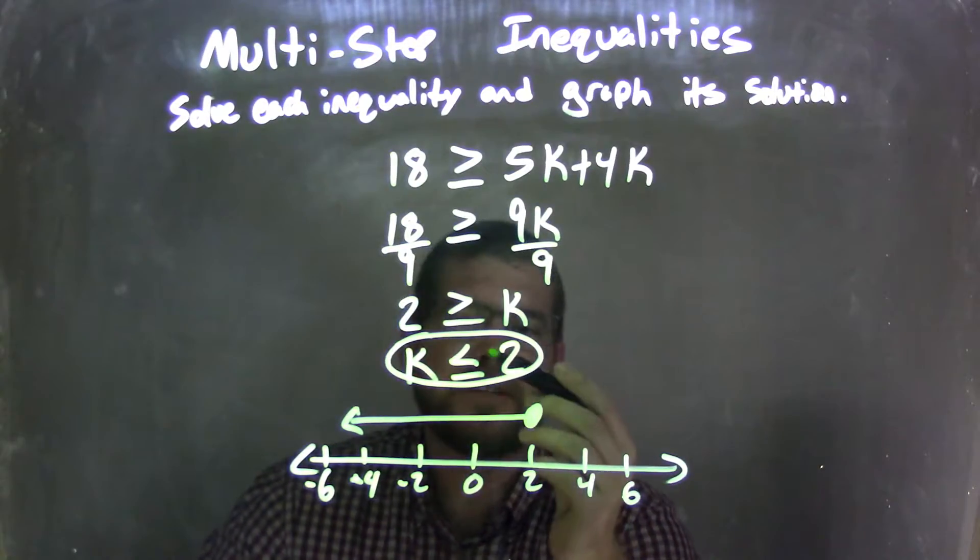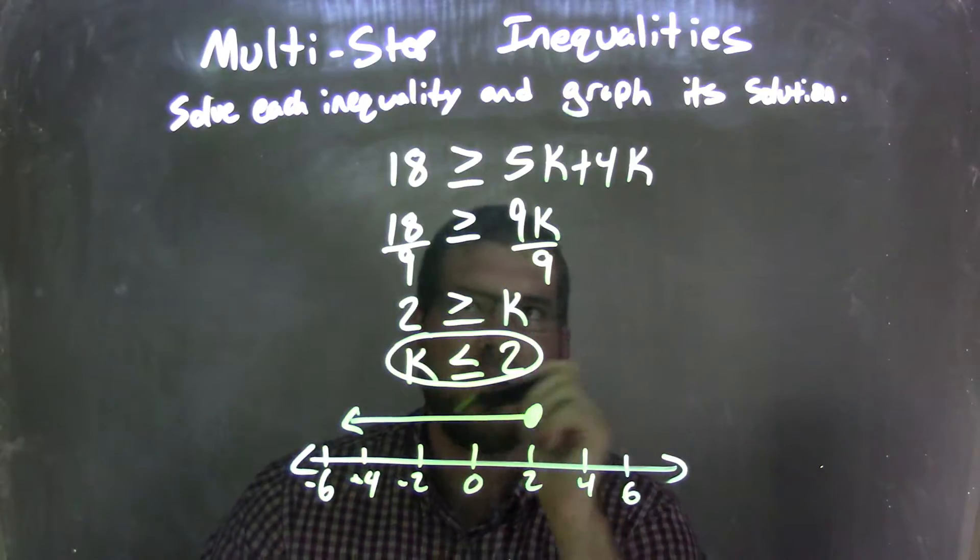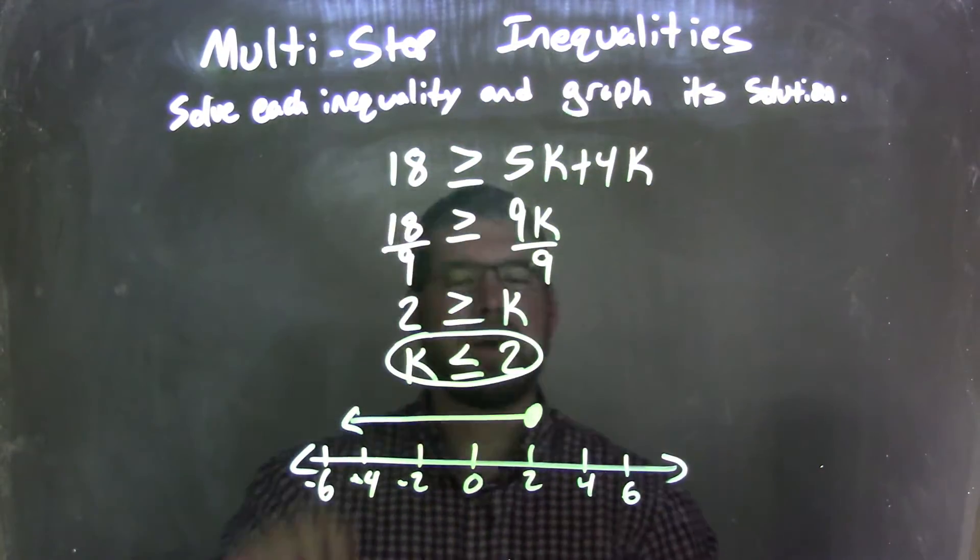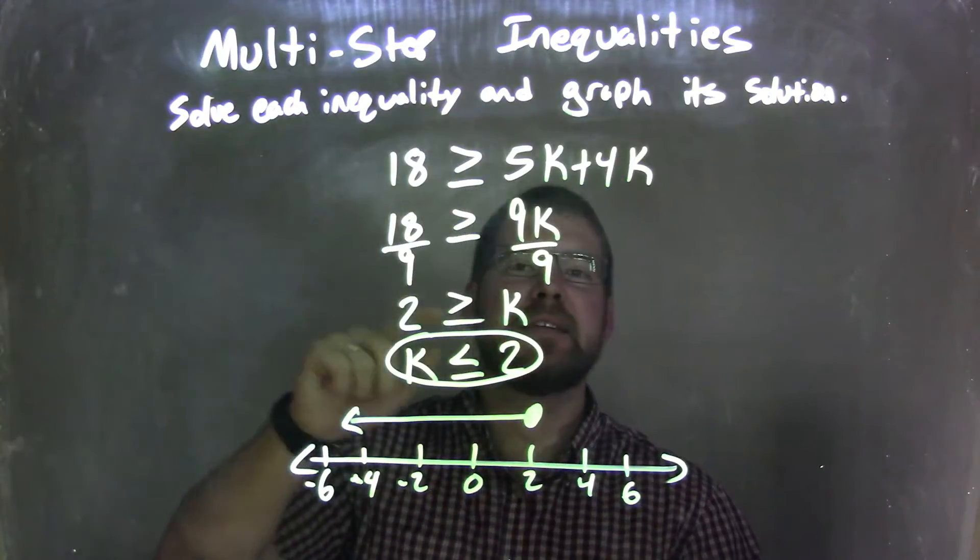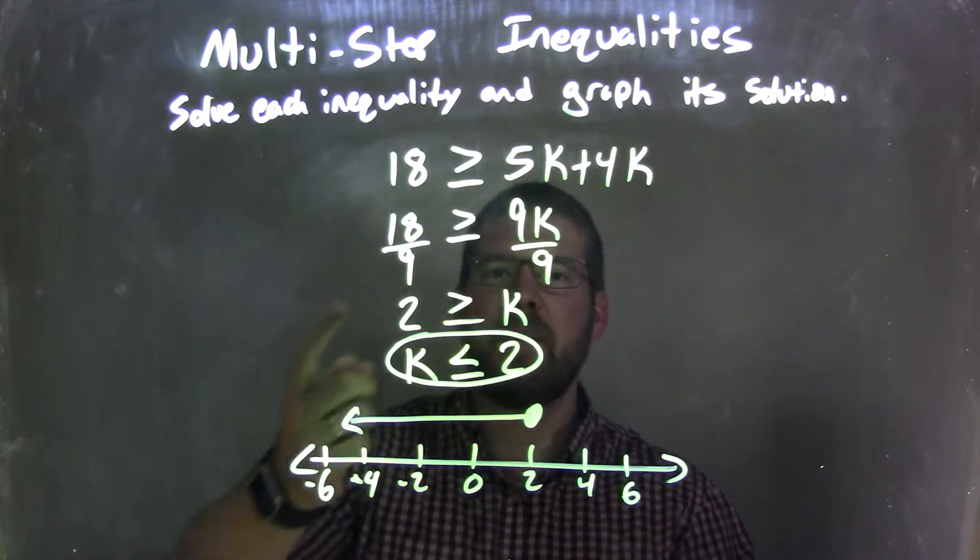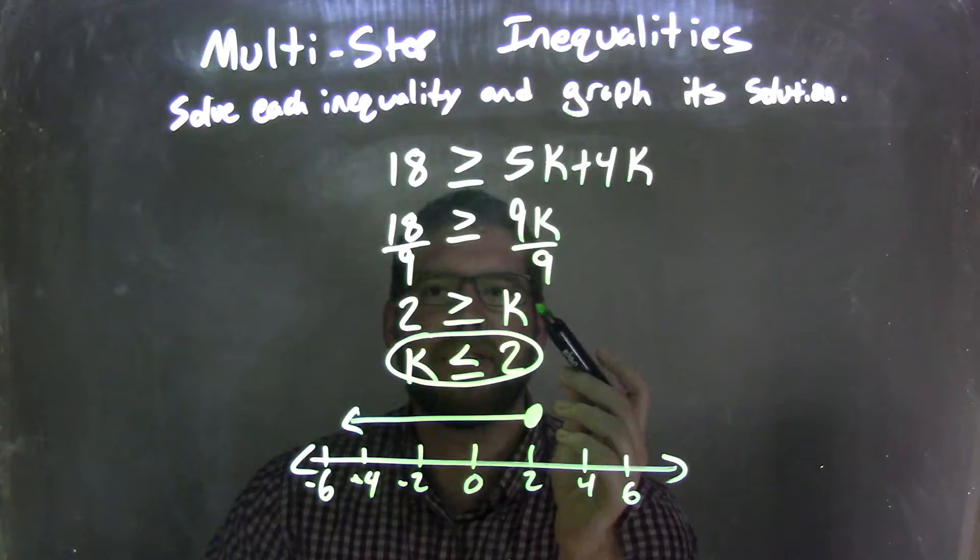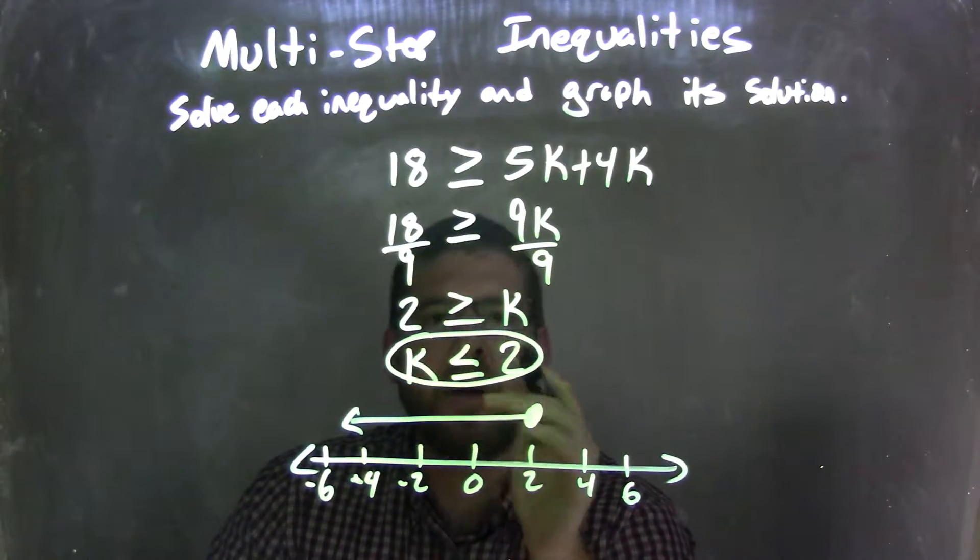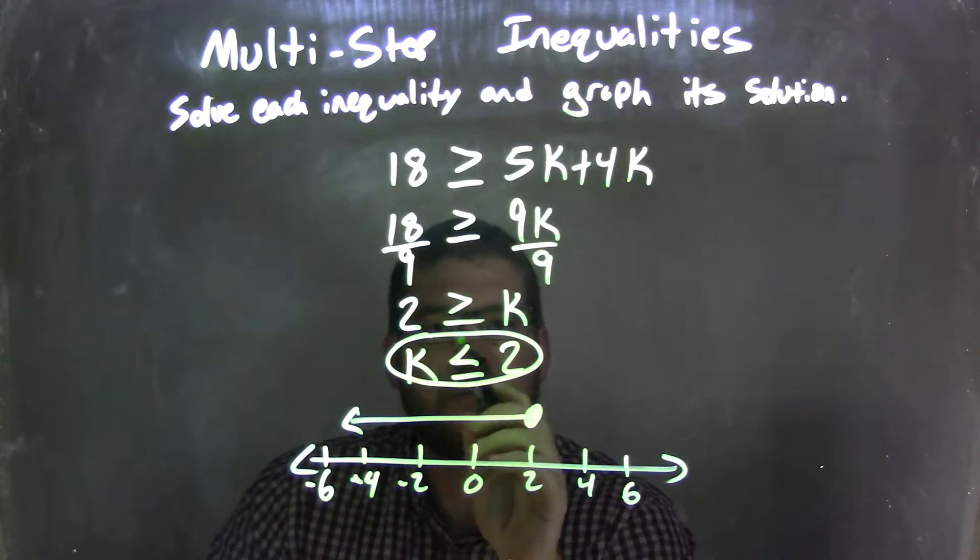This graph matches the answer, which is k is less than or equal to 2. So let's recap. We were given 18 is greater than or equal to 5k plus 4k. I combined my 5k and 4k together to get my 9k. I then divided by 9 on both sides, isolating k by itself. And 18 divided by 9 being 2. I then flip my inequality.